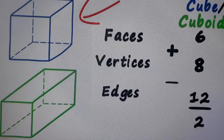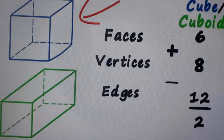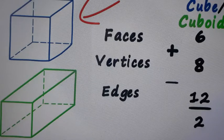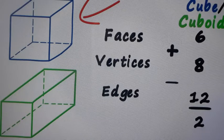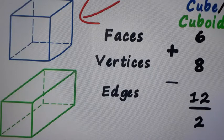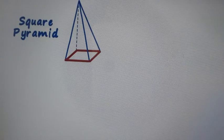and number of edges will be 12 only. So again, if we add number of faces plus number of vertices and subtract edges, then we got 2. Now square pyramid. This is called square pyramid because its base is